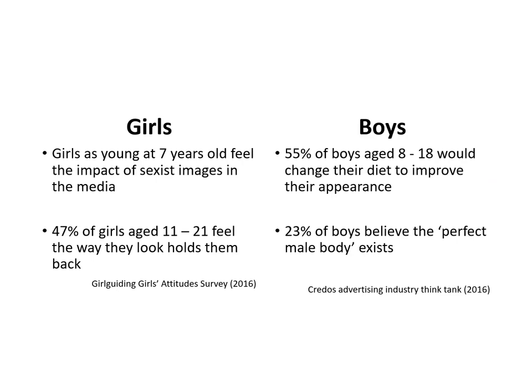The Girl Guides Attitude Survey in 2016 highlighted how body image problems were beginning much younger. Girls as young as seven were feeling the impact of sexist images in the media, and 47% of girls aged 11 to 21 felt that the way they look holds them back. This is increasingly an issue for boys too: 23% of boys now believe a perfect male body exists, and 55% of boys aged 11 to 18 would change — or do change — their diets to improve their appearance.